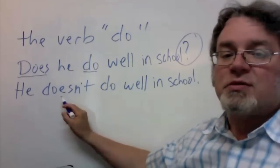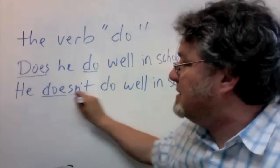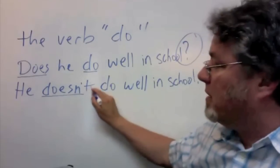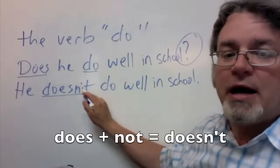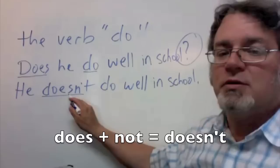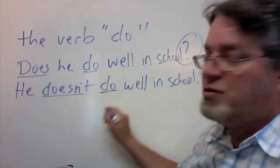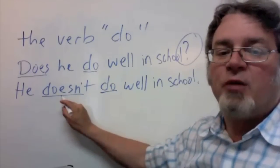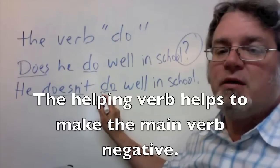In this sentence, the helping verb is negative. You have the contraction here for not. These two words together form doesn't, and the main verb is do. This is the helping verb. This is the main verb.